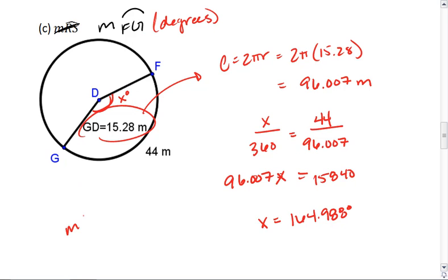Thus, the measure of arc FG is the same as its central angle, and that's 164.988 degrees.